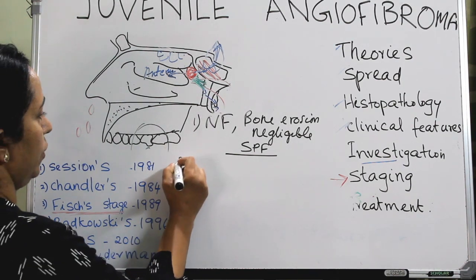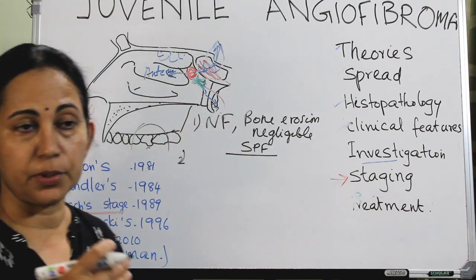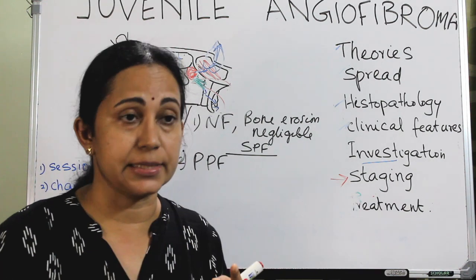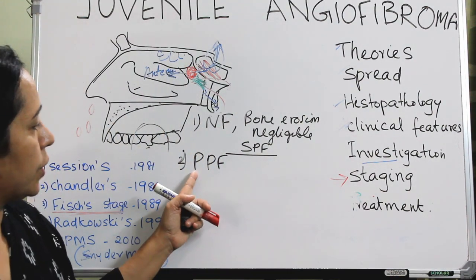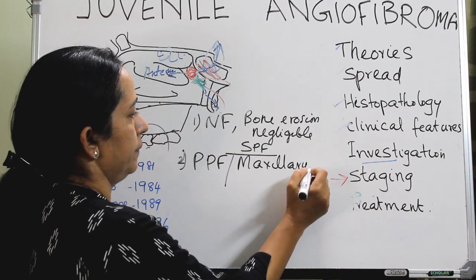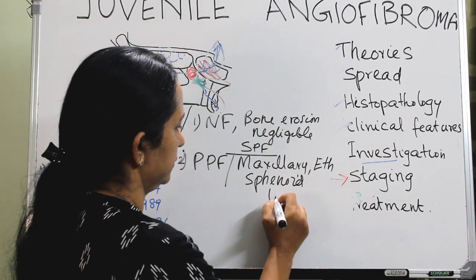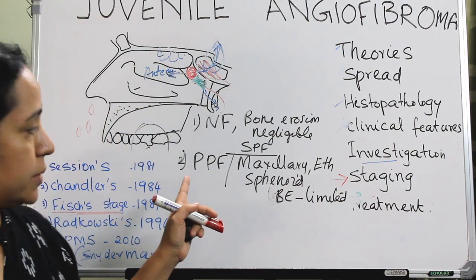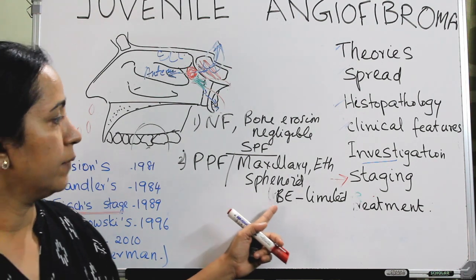Stage 2 of Fisch staging: the tumor extends into the pterygopalatine fossa from the sphenopalatine foramen, or it extends into sinuses — either maxillary, ethmoid, or sphenoid — but not the frontal sinus. This is with limited bone erosion. So stage 2 is tumor invading the pterygopalatine fossa or maxillary, ethmoid, or sphenoid sinuses with limited bone erosion.